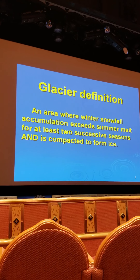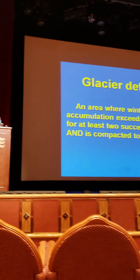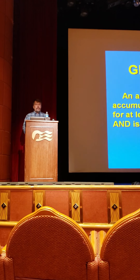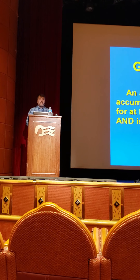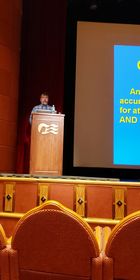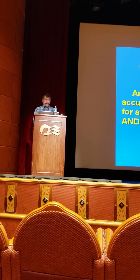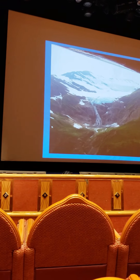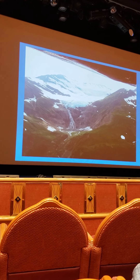Snowfall accumulation exceeds summer melt for at least two successive seasons and is compacted to form ice. So we see we have a process of snowfall happening and then it goes through a little metamorphosis process of changing into glacial ice from those nice fluffy snowflakes.